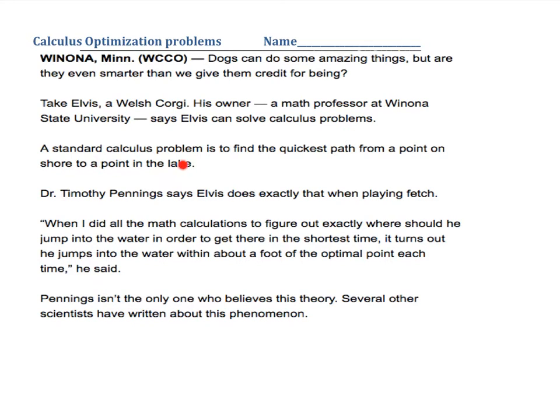And so the problem is a standard one that is to find the quickest path from a point on shore to a point on a lake. And then when he did all these math calculations, he found out that his dog was within about a foot of the optimal point at that time, according to calculations through calculus. And so we want to look at this dog problem and see how we can figure this one out mathematically.